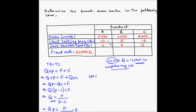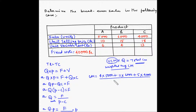The weighted average contribution margin will be the sum of the individual contribution margins multiplied by their respective units. For product A, the unit contribution margin is 10 minus 6, which is 4, and the total contribution for A is 4 multiplied by 5,000. For B, the unit contribution margin is 15 minus 4, which is 11, multiplied by 6,000. For C, the unit contribution margin is 18 minus 13, which is 5, multiplied by 4,000. This sum is divided by the total units sold: 5,000 plus 6,000 plus 4,000, which is 15,000.